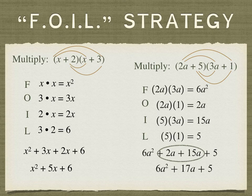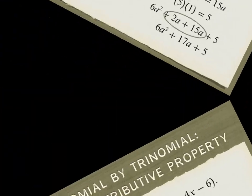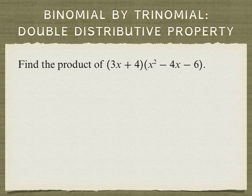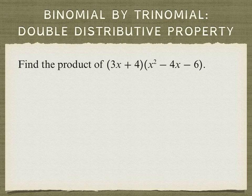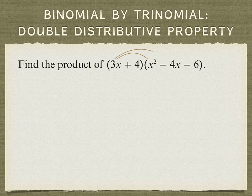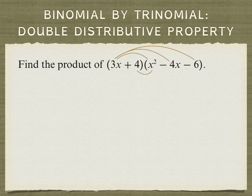So the FOIL strategy limitation is that this is only used for multiplying binomials. Now if we multiply a binomial by a trinomial, we can use the double distributive property. We can take the 3x and multiply it by the three terms of the trinomial, and then the 4 times the three terms of the trinomial.